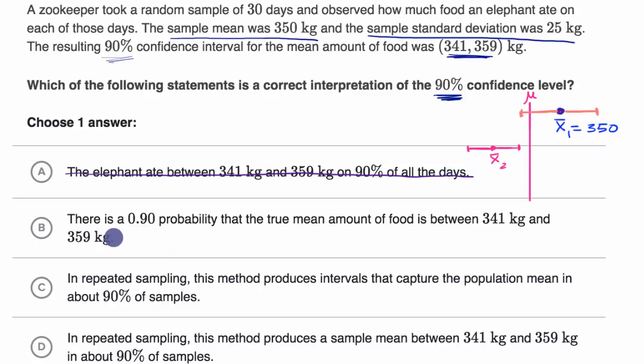The reason why this is a little bit uncomfortable is it makes the true mean sound almost like a random variable, that it could kind of jump around, and it's the true mean that kind of is either going to jump into this interval or not jump into this interval. So it causes a little bit of unease. I'm just going to put a question mark here.